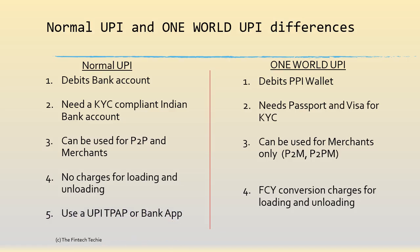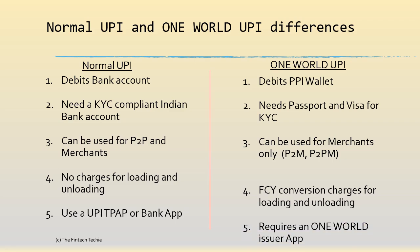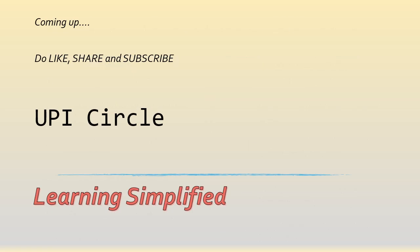Finally, for normal UPI you use a UPI TPAP application like GPay as provided by your bank, whereas for One World you need to use the One World issuer app from vendors like IDFC, Pine Labs, Transact and so on. Hope this gave you a good idea of UPI One World. Next, we are going to look at UPI Circle in the next video. Thank you.